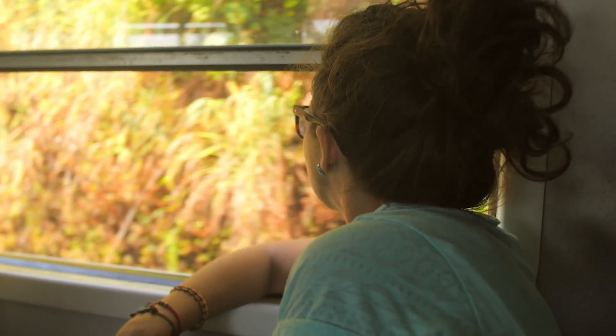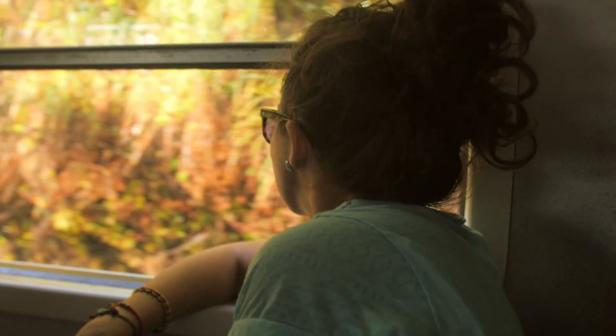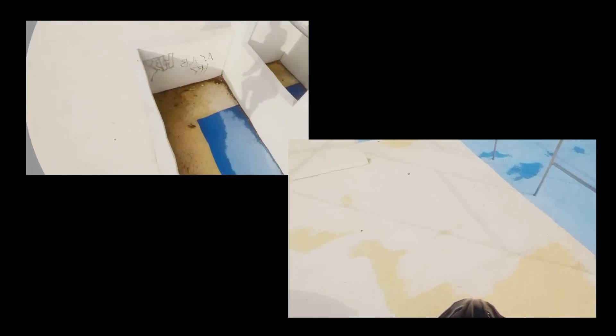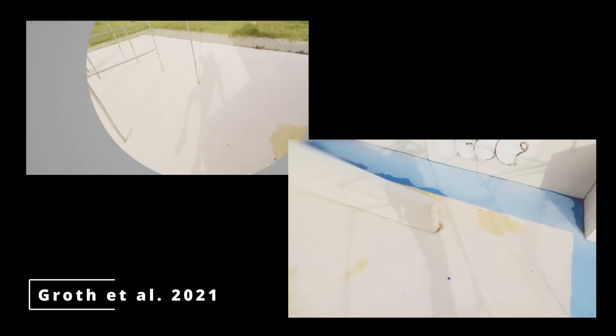Central to this issue is vection, the illusion of self-motion. Several techniques such as introducing tunnel vision, blurring content in the periphery, or modifying the camera path are known to reduce vection and therefore cyber sickness.